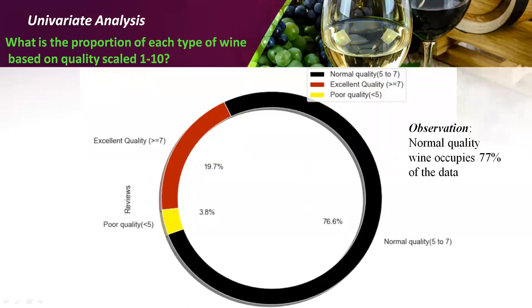Univariate analysis tells about the relative frequency distribution of each variable in the given dataset. Here we are doing an analysis about the proportion of each type of wine based on the quality scale 1 to 10. From the donut plot, we observe that normal quality wine, shown in black, occupies the maximum type of wine in our dataset. Around 77% of the data comes under normal quality, 19.7% under excellent quality where the quality score is greater than 7, and poor quality is less than 5.